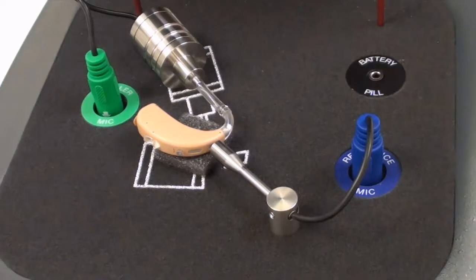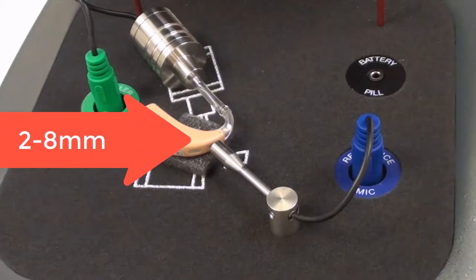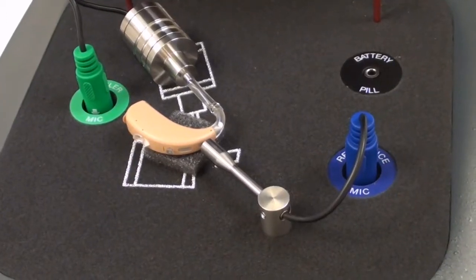Position the hearing aid so that the center of the sound inlet of the hearing instrument microphone is between 2 and 8 millimeters from the reference test microphone.